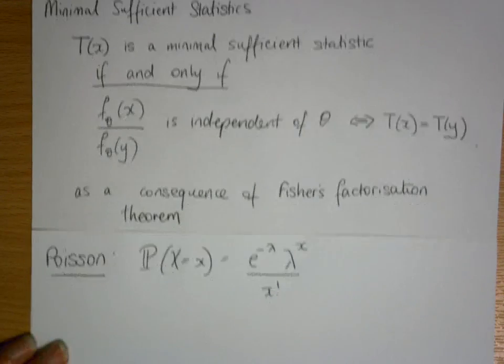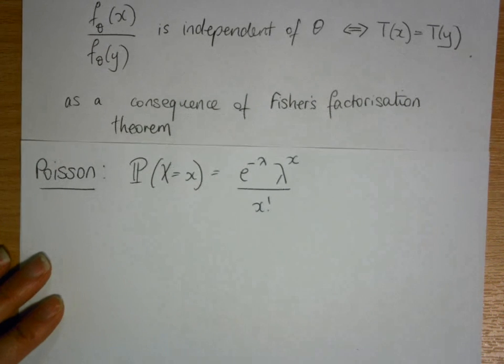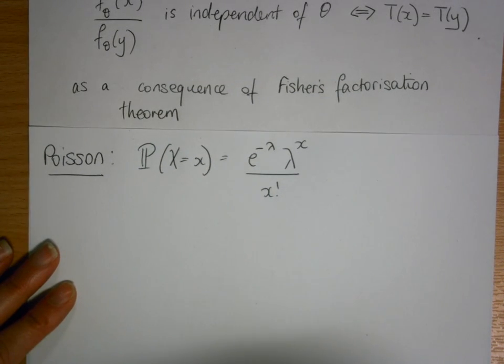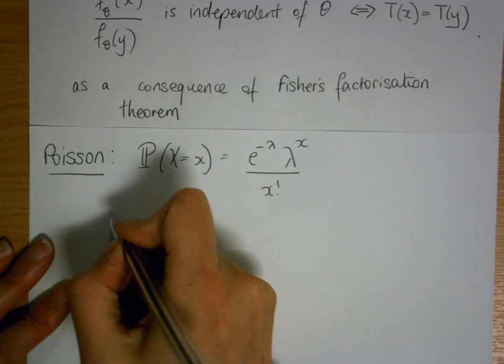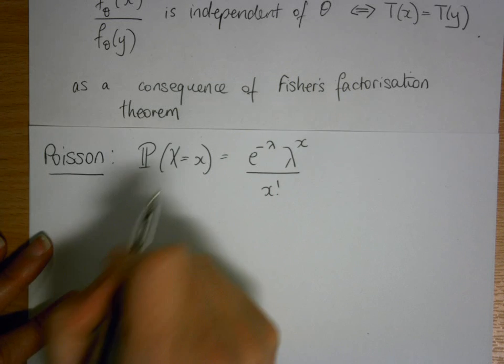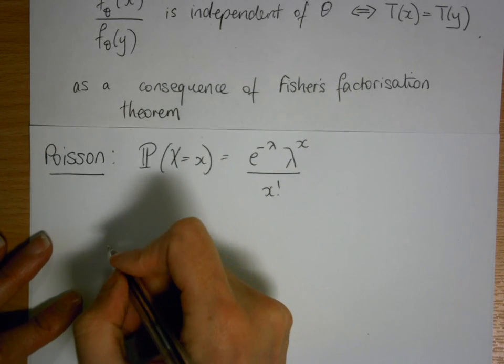If we have our Poisson distribution here and we think about this in terms of x, instead of one observation we have n observations. We would have our ratios would be...